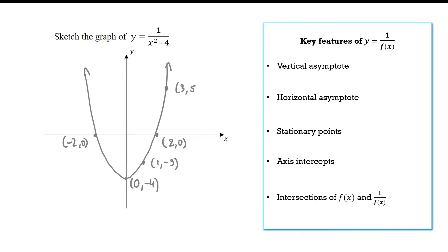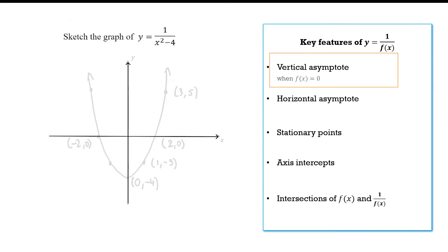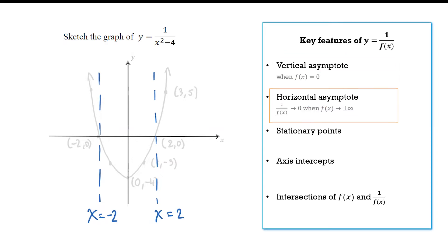The first key feature is the vertical asymptote, which occurs whenever the denominator is 0. In this case, when x is 2 or negative 2, as the parabola approaches 0 the reciprocal approaches something very large — either positive or negative — giving us vertical asymptotes. Horizontal asymptotes occur because as the parabola gets very large, the reciprocal gets very small and approaches 0.